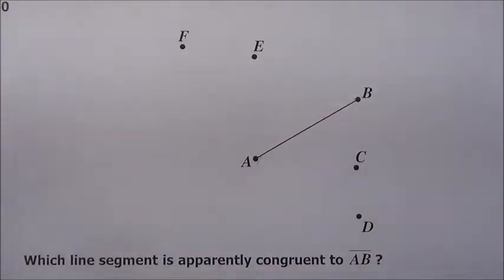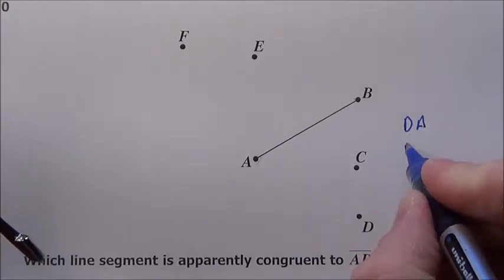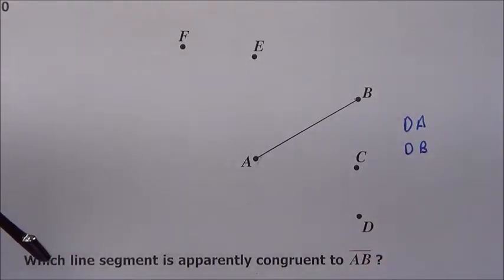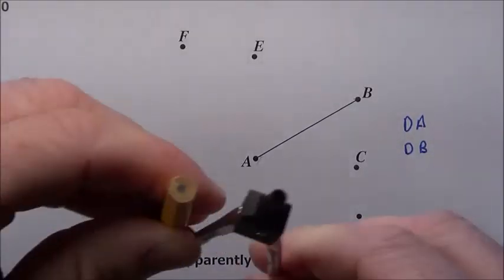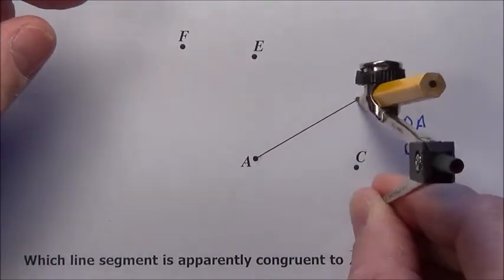So I'm going to look for an answer that has line segment DA or line segment DB. D seems to be the perfect distance away from A and to B.